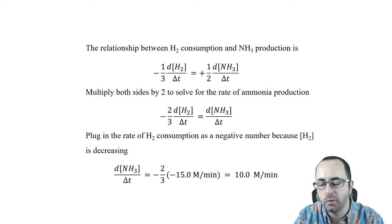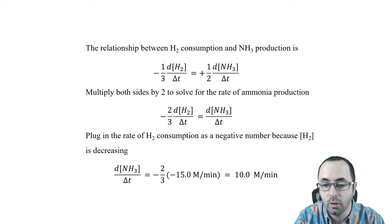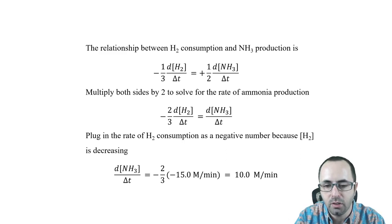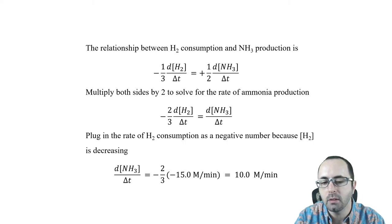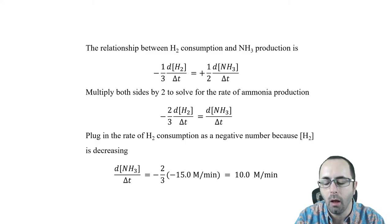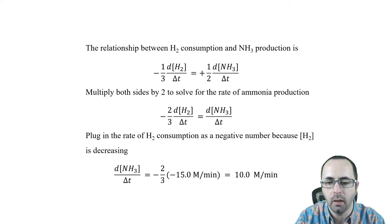In this lecture we discussed what kinetics is, what factors affect the rates of reaction, how we can write and calculate reaction rates from data, and how to compare the rates of consumption or production of reactants and products in a single reaction. For the next lecture, we're going to talk about the rate law — a way of using numbers to describe how fast a reaction is as dependent on the concentration of reactants. See you in the next one.